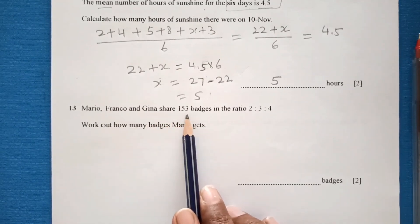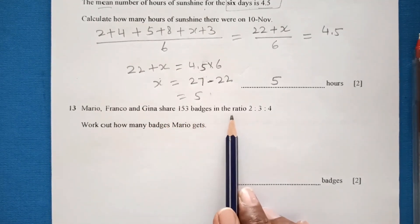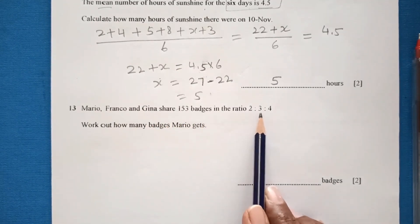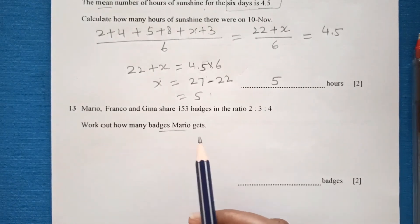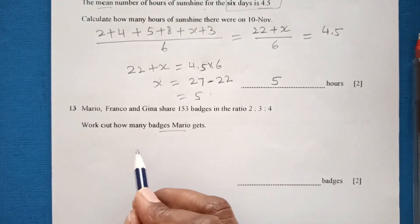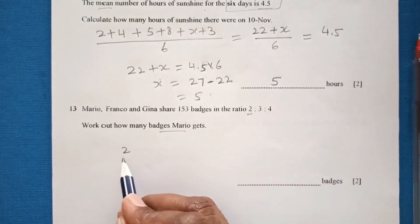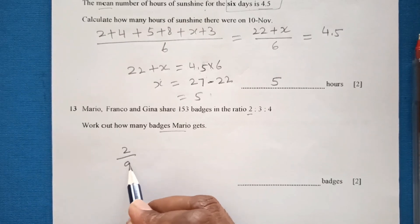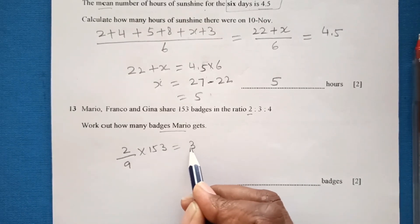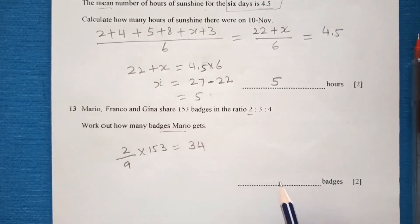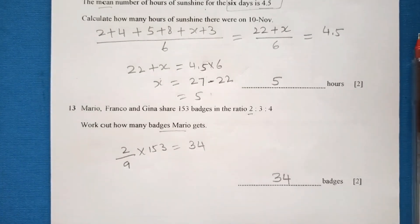Question 13: Mario, Franco, and Gina share 153 badges in the ratio 2:3:4. Work out how many badges Mario gets. Mario gets 2 out of 9 parts, so: (2/9) × 153 = 34 badges.